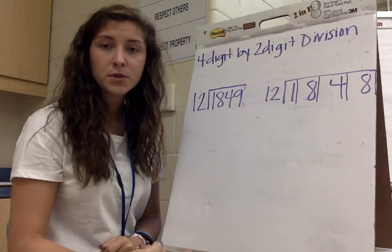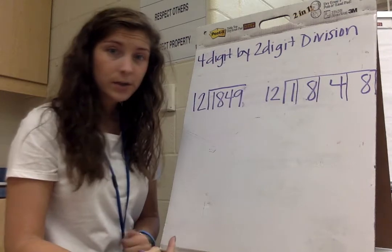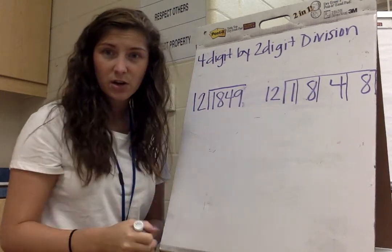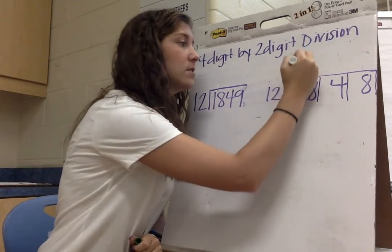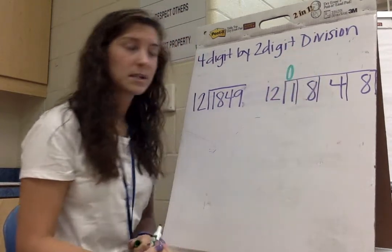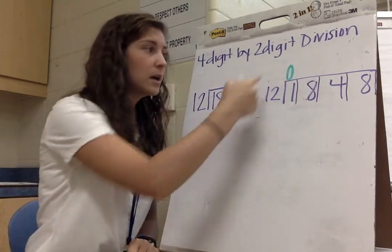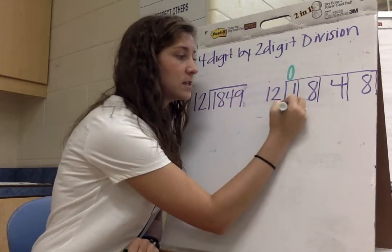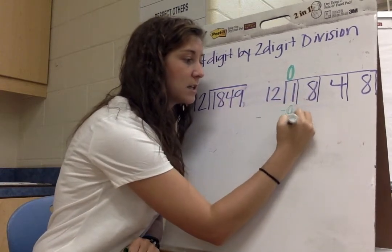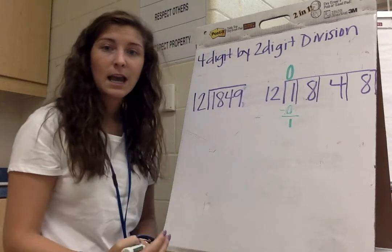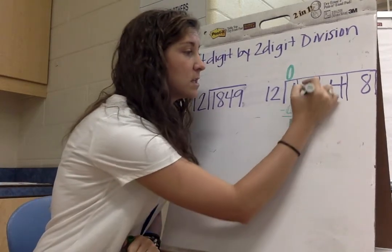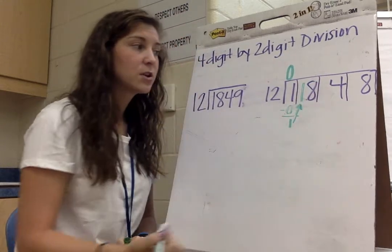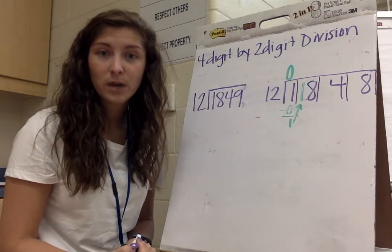Well, I know that 1 times 12 is 12, so can 12 actually go into 1? No, it cannot, but I still have to put my 0 up there as my placeholder. I know that 0 times 12 is 0, so I have to subtract. That gives me 1. Now, I have to take that 1, and I have to move that 1 over to the side. So that 8 now becomes an 18.